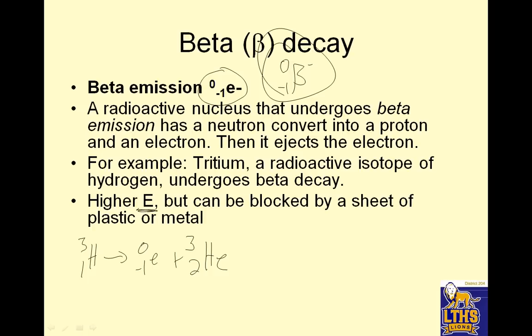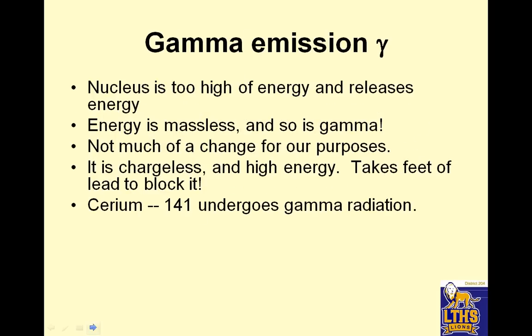Beta decay is higher energy, but it can be blocked by a sheet of plastic or metal. Gamma emission. Gamma is usually shown with the zeros here. Whoops, I'm going to make my zeros better. So it has no mass and no protons. Nucleus is too high of energy and releases energy. The energy is massless, and so is gamma. Hey, it has no mass.